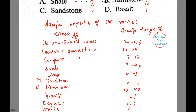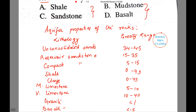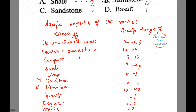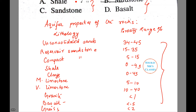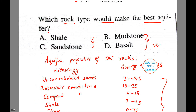Other rock types are less than 2 percent. Given this chart and the options available — shale, mudstone, sandstone, or basalt — we can clearly say that sandstone would make the best aquifer among the given options.